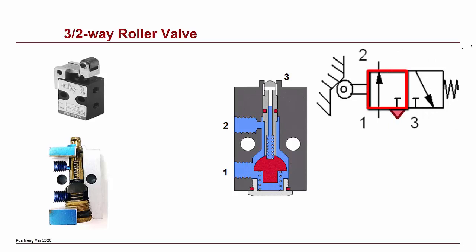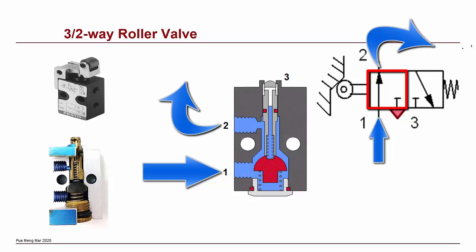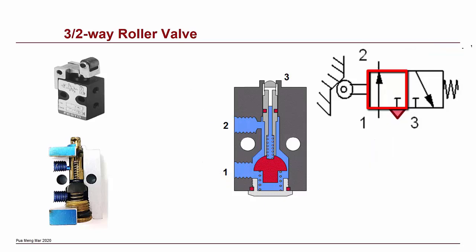When the roller valve is activated or switched over to another position, compressed air supply to port 1 is connected to port 2. Compressed air coming out of port 2 can be connected to the input port of the next pneumatic device and activate that device. Note that at this switching position, port 3 is blocked.